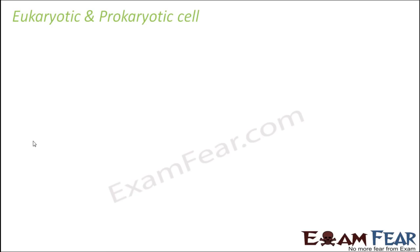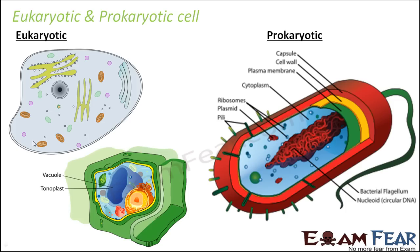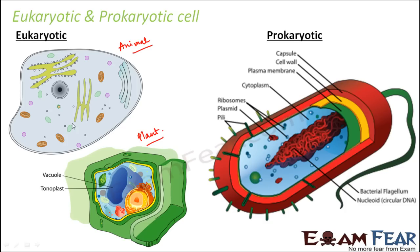This is how a eukaryotic cell looks — this is a eukaryotic animal cell and this is a eukaryotic plant cell. Plant and animal cells have quite a few differences, like the cell wall present in plant cells but not in animal cells. If you look at these two cells you can see distinct organelles, everything bounded by a membrane. Whereas if you look at the prokaryotic cell, it is just one dense area with everything present but no distinct organelles like those seen in eukaryotic cells.